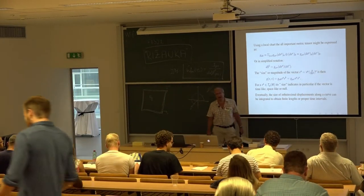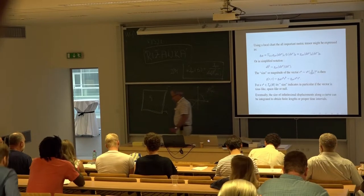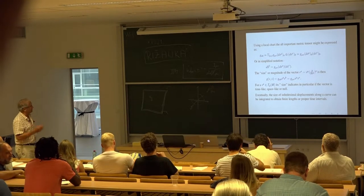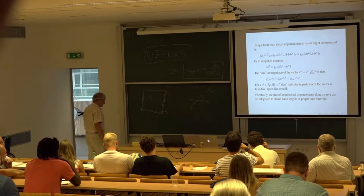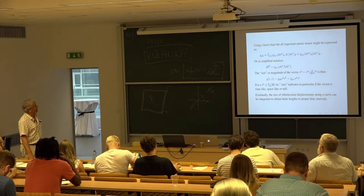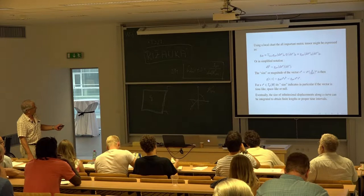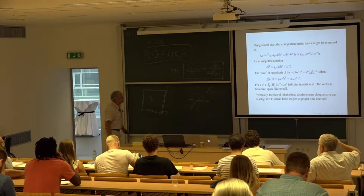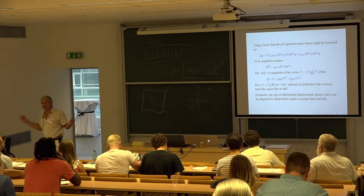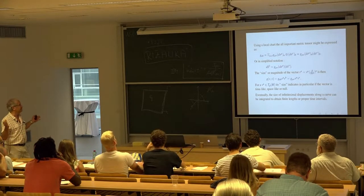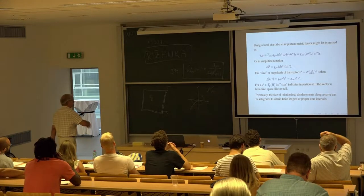Yesterday we introduced the basic ideas of the theory of general relativity, and we introduced some mathematical structure that we claimed was going to be needed to talk about this theory. In particular, we introduced this object that I claimed was very important physically, which is the metric tensor. I defined spacetime as being given by a differentiable manifold with a smooth metric tensor defined on it.